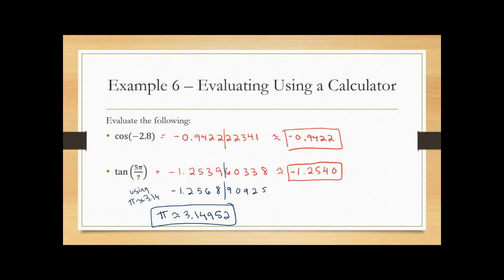That's the last example on evaluating with a calculator. Smartphones are fairly intuitive for this — flip it sideways for scientific mode and you get a degree/radian button, the pi button, sine, cosine, tangent, and even the reciprocal functions like sine⁻¹, cosine⁻¹, tangent⁻¹, and hyperbolic functions.